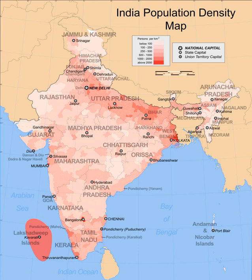India is projected to be the world's most populous country by 2024, surpassing the population of China. It is expected to become the first political entity in history to be home to more than 1.5 billion people by 2030, and its population is set to reach 1.7 billion by 2050.